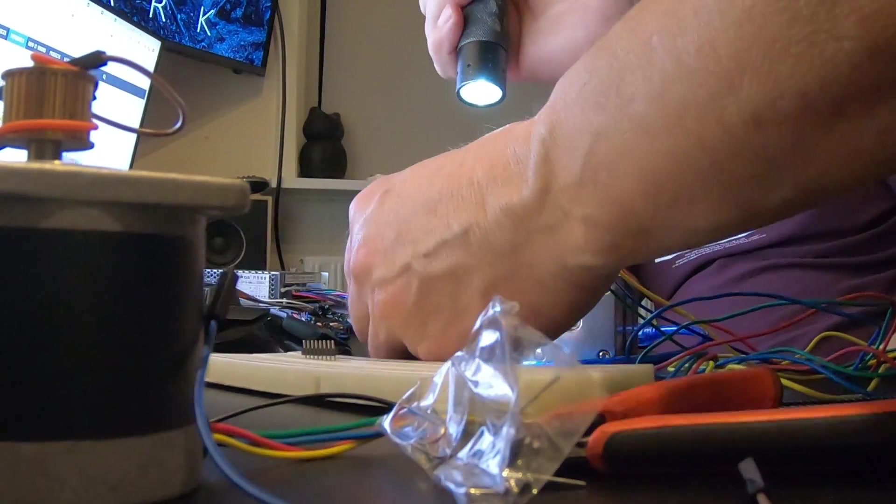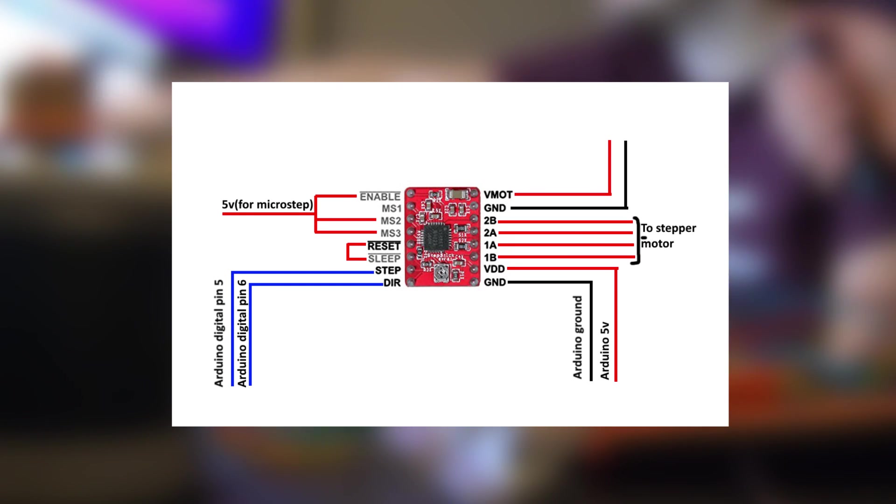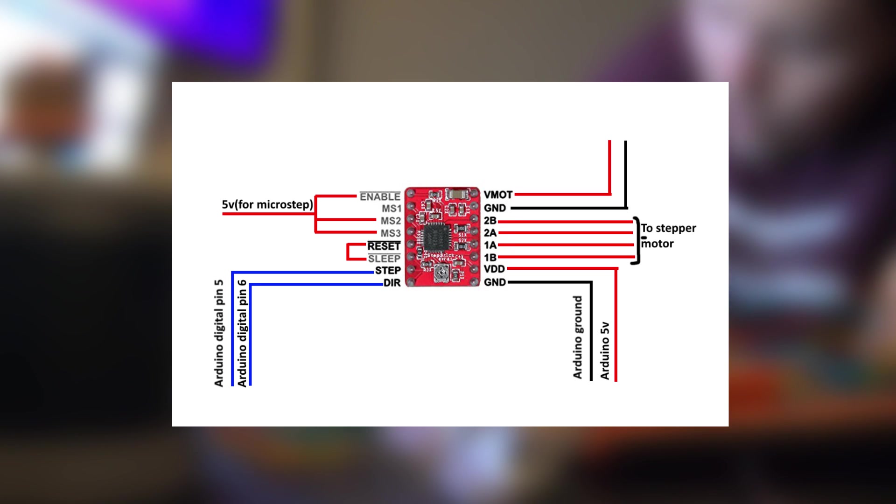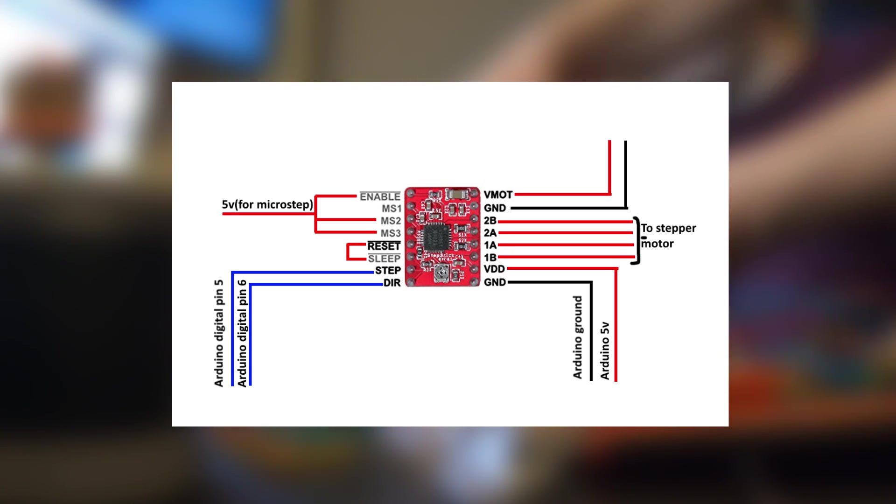Start by attaching the wires to the stepper motor control board like shown on this schematic here, and putting the wires from the control board into the Arduino also as shown. You can use any digital ports you like, these are just for demonstration purposes. They can easily be changed in the code.